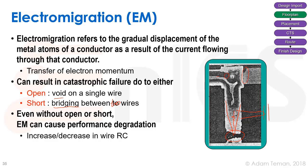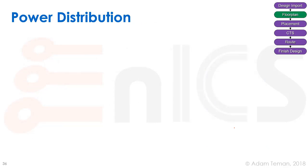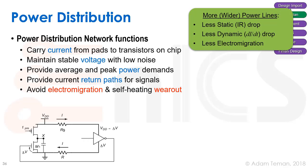Even without an open or short, electromigration can cause performance degradation: if the conductor gets thinner, resistance increases. To solve this, we distribute power across the whole chip. Power distribution must carry current from the pads to the transistors, maintain a stable voltage with low noise so VDD and ground stay at their correct values, and provide average and peak power demands while avoiding electromigration and self-heating wear-out.